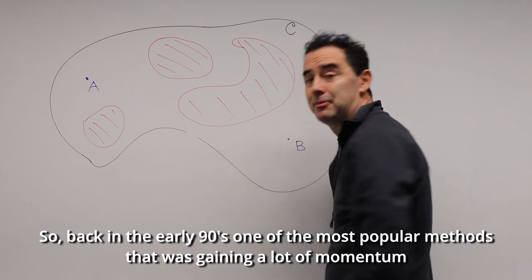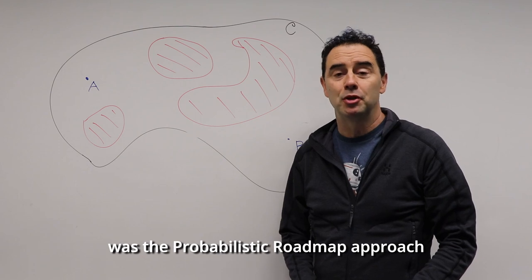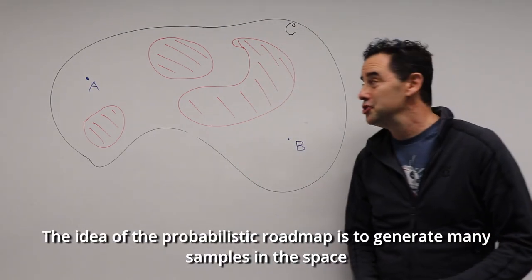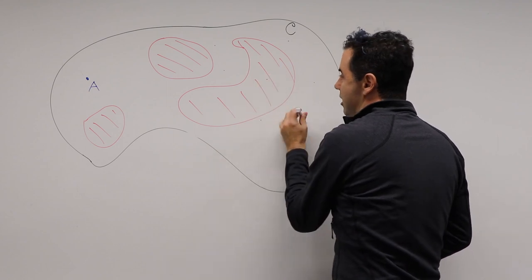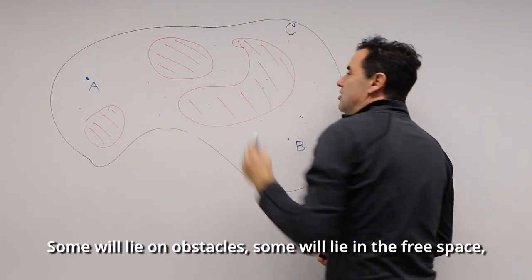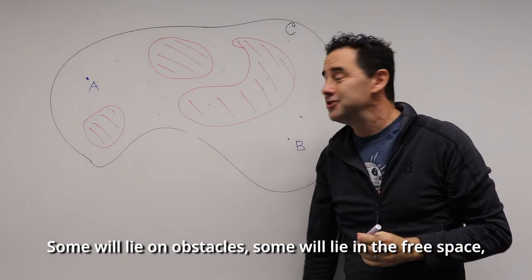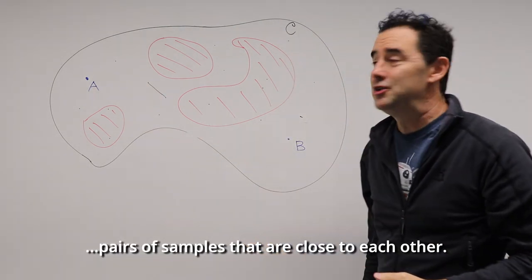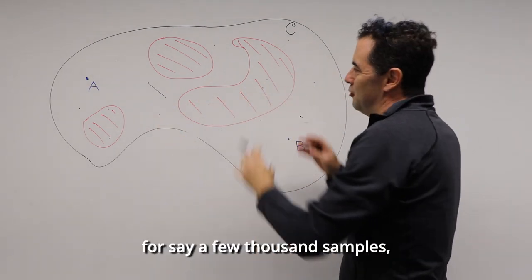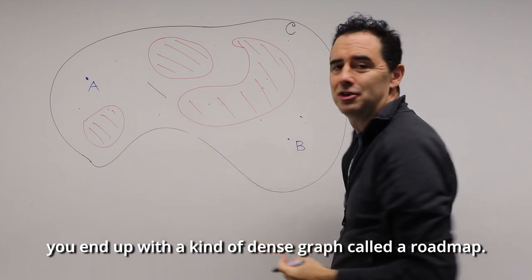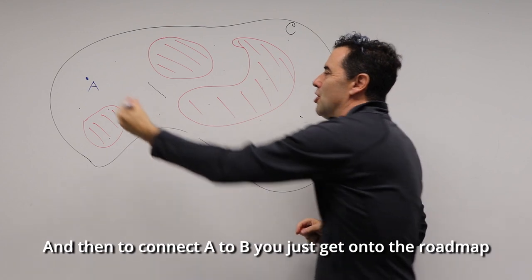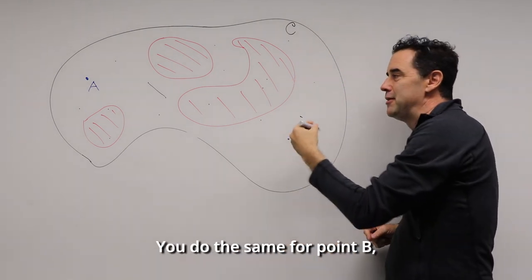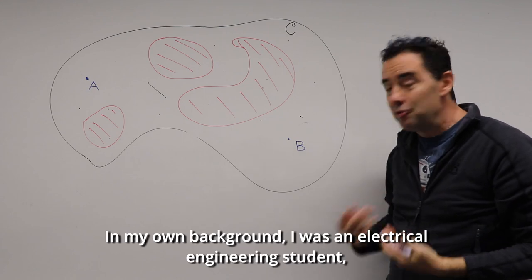Back in the early 90s, one of the most popular methods gaining momentum was the probabilistic roadmap approach, developed by researchers at Utrecht University and Stanford University. The idea is to generate many samples in the space at random — some in obstacles, some in the free collision-free part — then construct a roadmap by connecting pairs of nearby samples. After doing this for a few thousand samples, you end up with a dense graph, then use standard graph search to connect A to B.